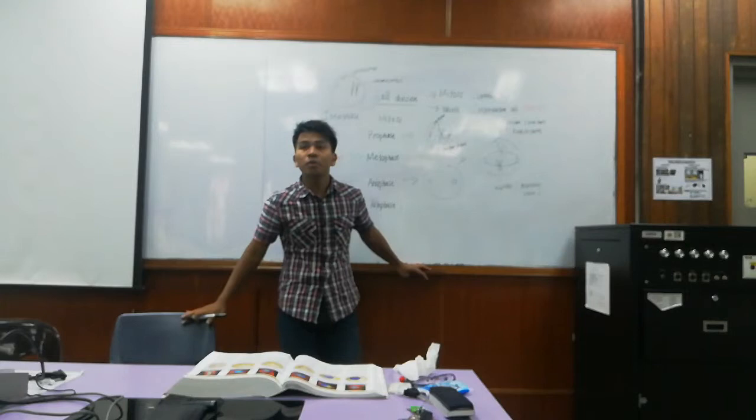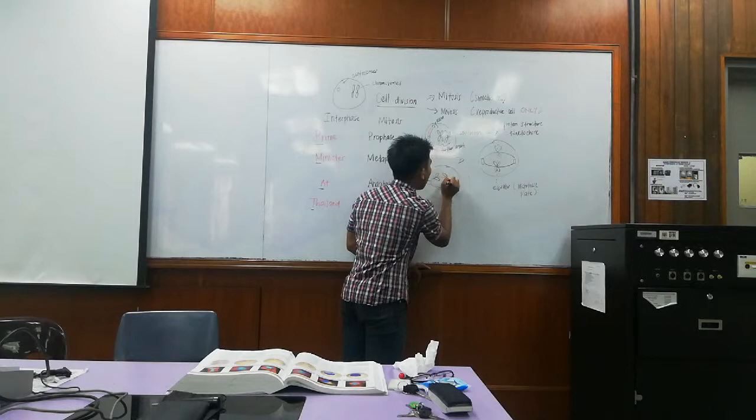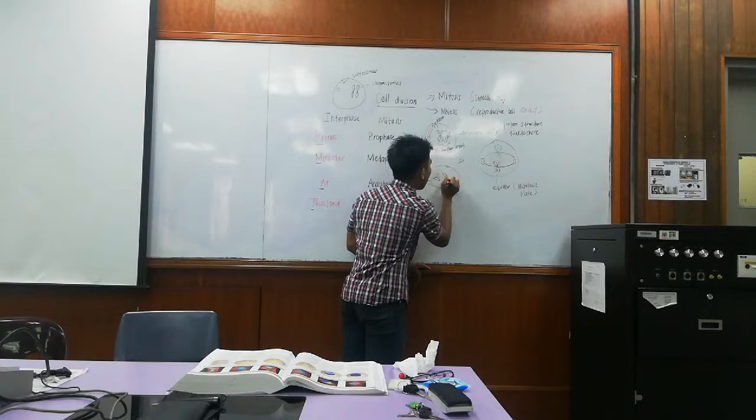The kinetochore microtubules will be condensed and cause the sister chromatids to be separated from each other. And the sister chromatids will move to the opposite poles of the centrosomes.